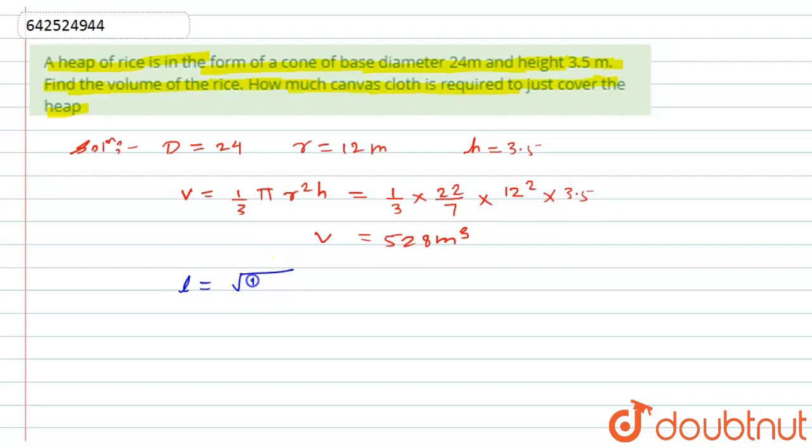That is l equals √(h² + r²), which will be equal to under root h is 3.5 squared plus r is 12 squared, which will be equal to 12.5 meters.